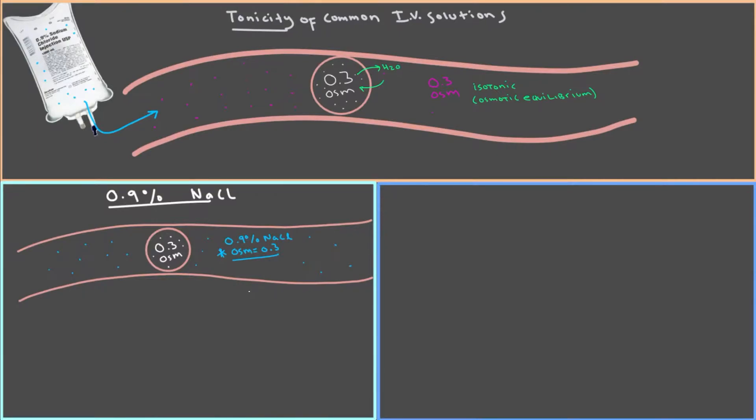This is something worth committing to memory. So anytime you see a solution 0.9% sodium chloride, you can assume that it has an osmolarity of 0.3 and is therefore isoosmotic to your normal plasma and to your normal cells.